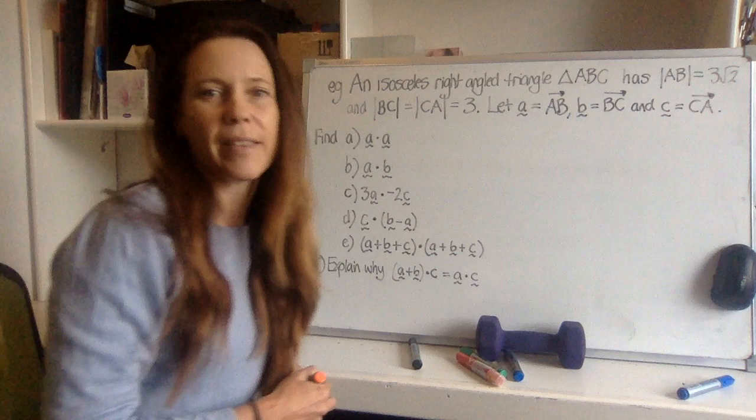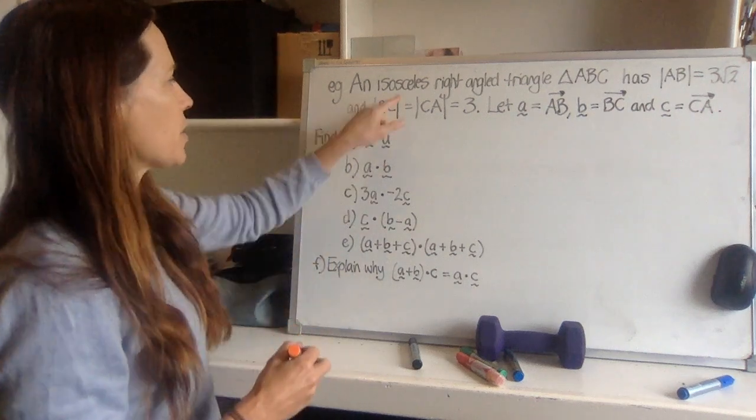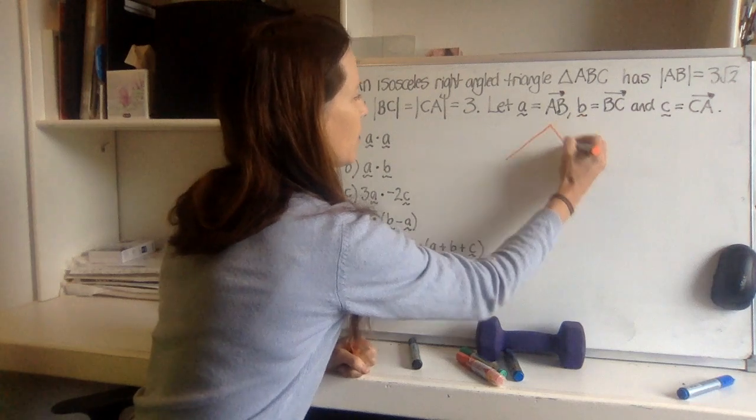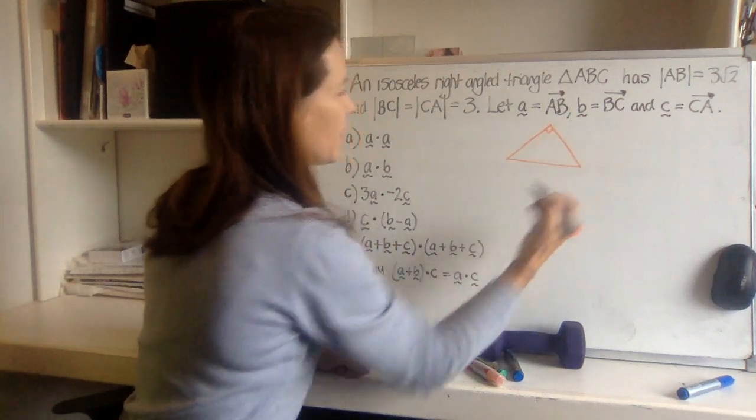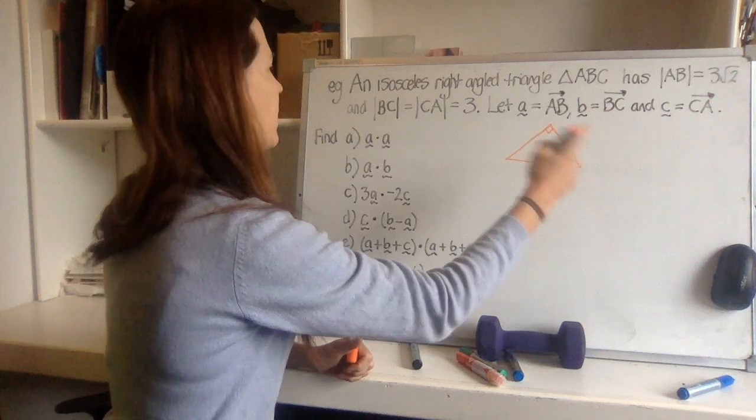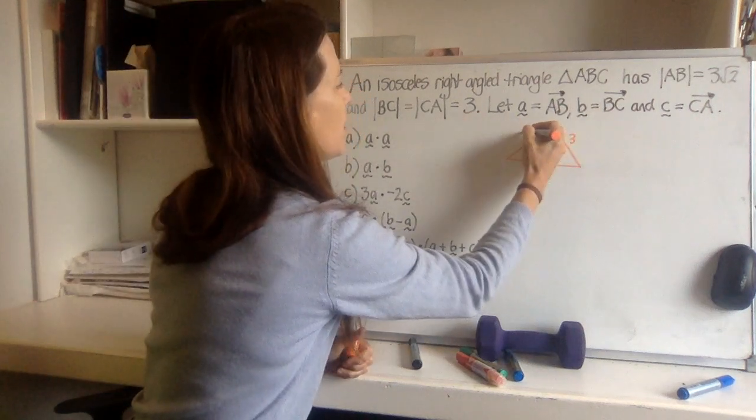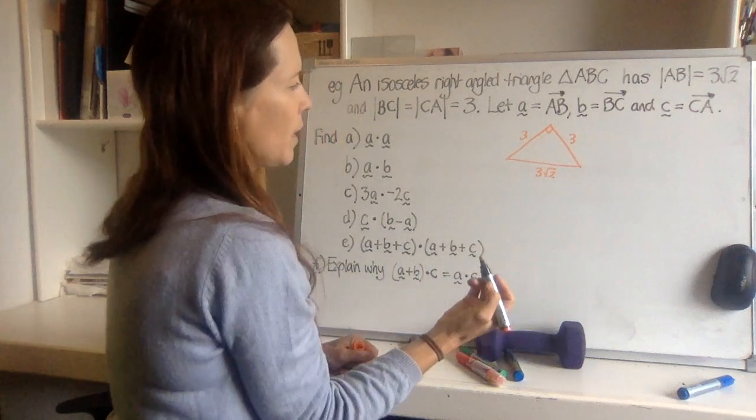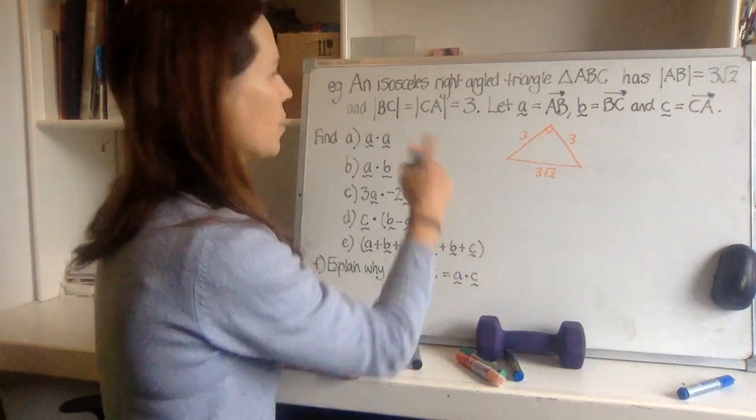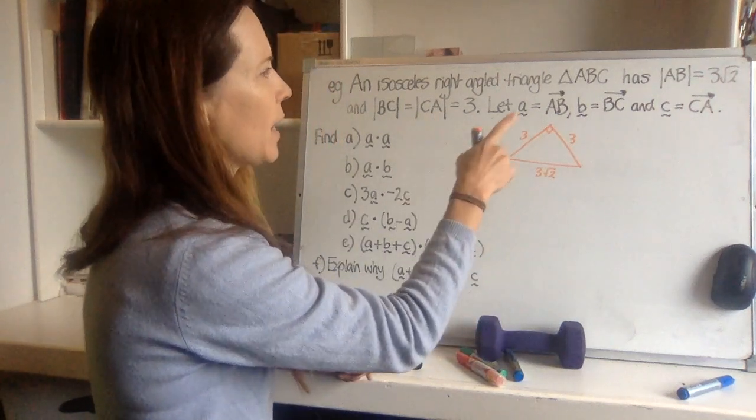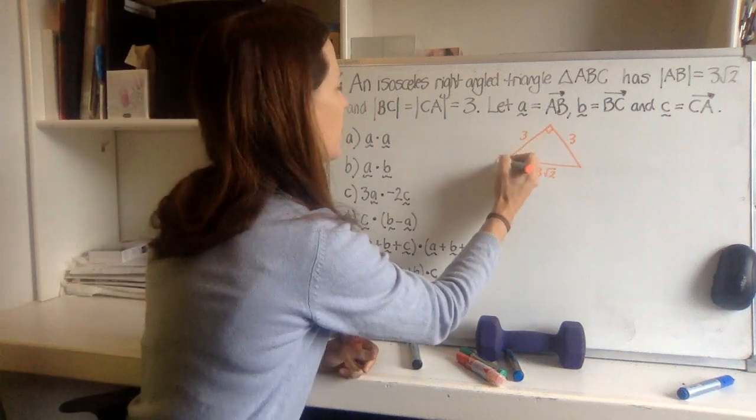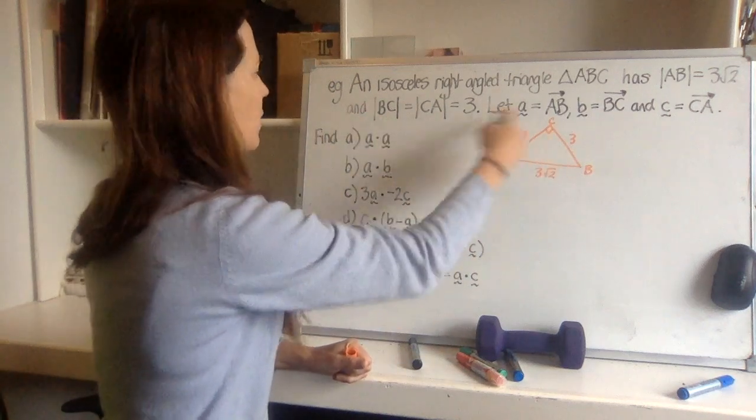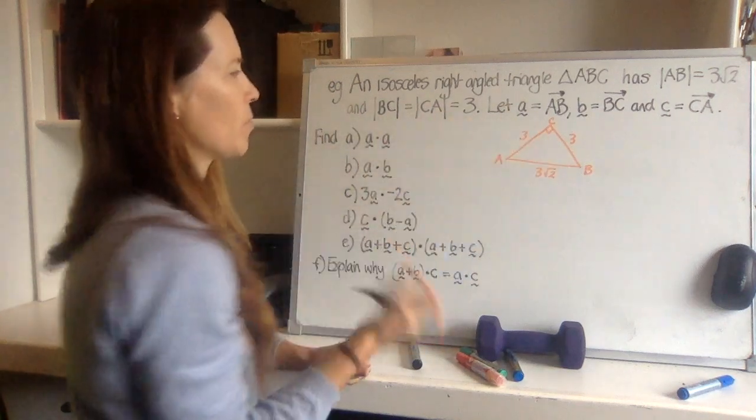Now the first thing to do in a question like this is to draw a picture. So it's isosceles and it has a right angle. So if we sketch it, looking with the right angle up here, it's something like this. And the two sides that are the same have a length of 3, and the other side is 3 root 2. And what else do we need to know? We need to label it. So AB is 3 root 2, so this must be C.